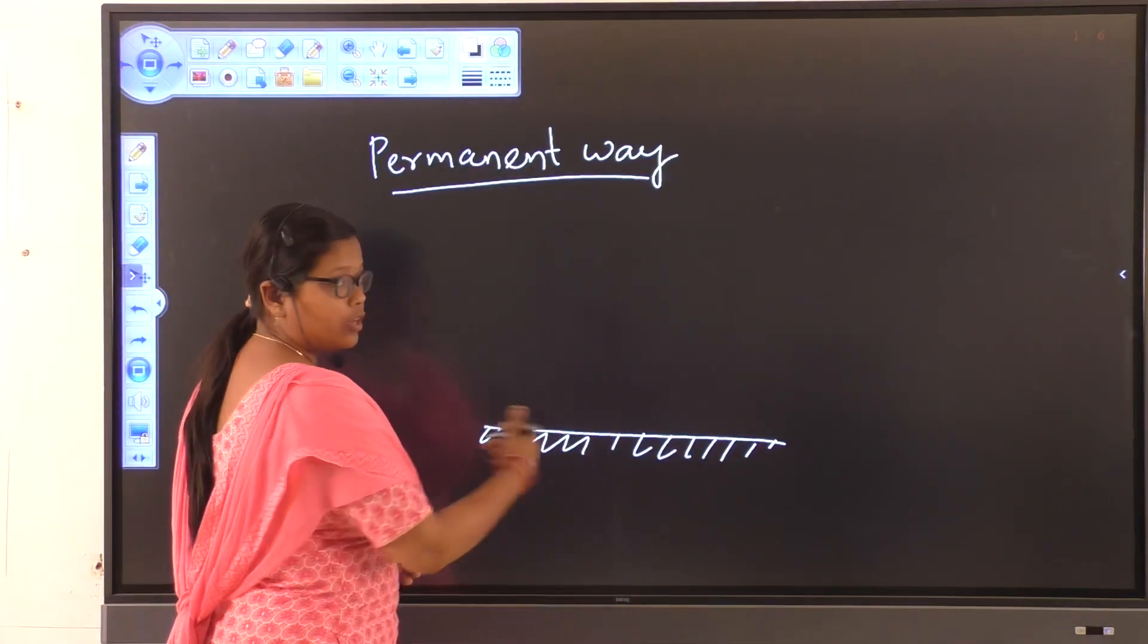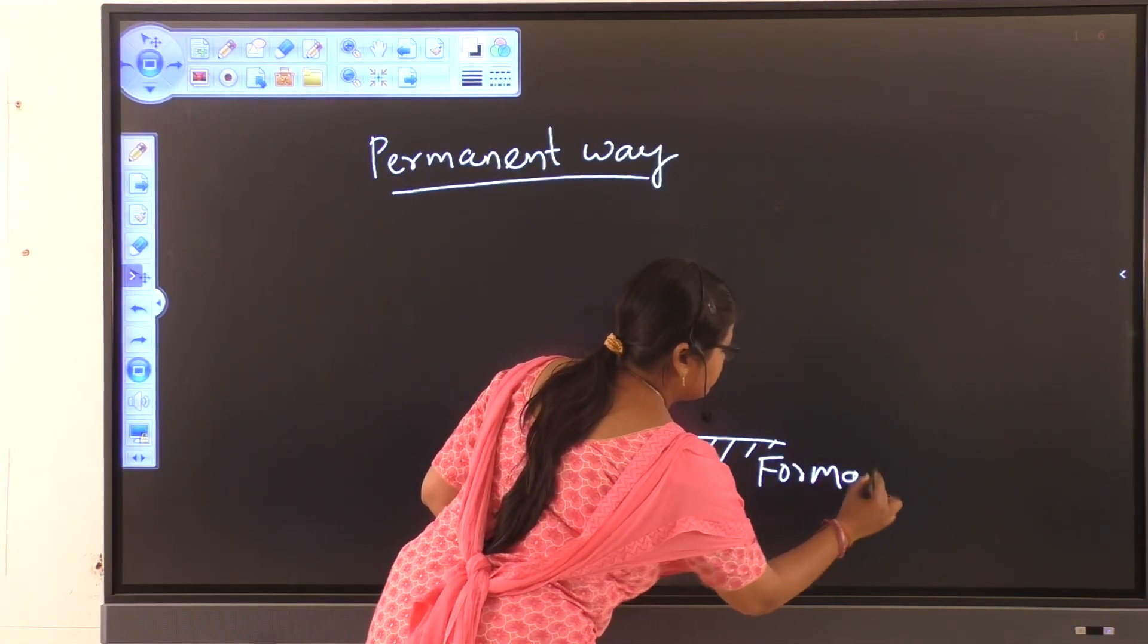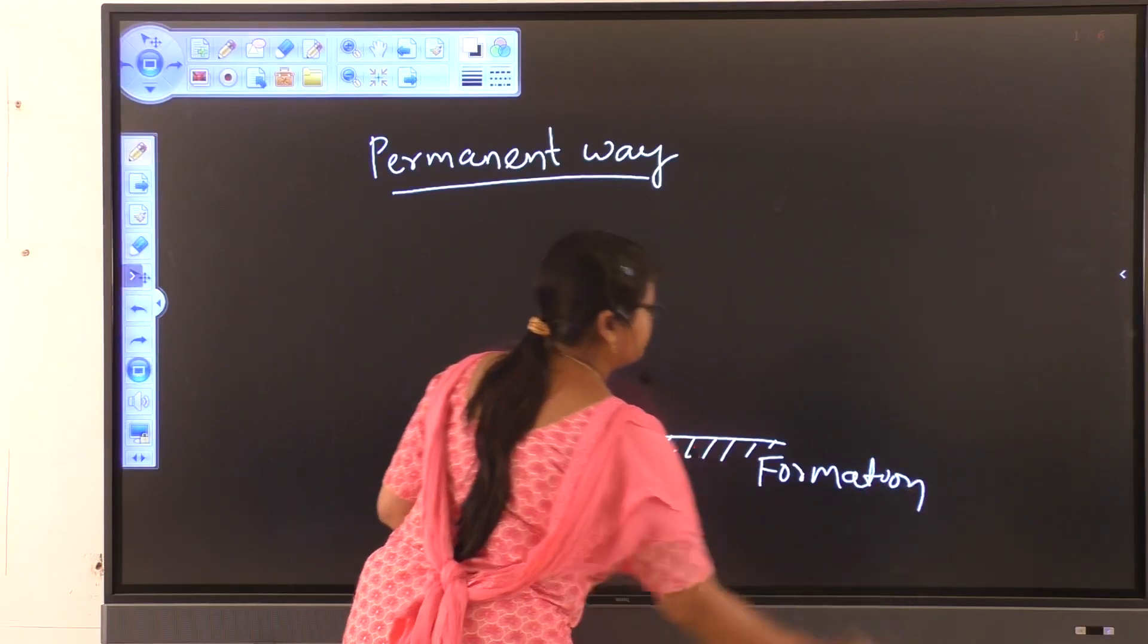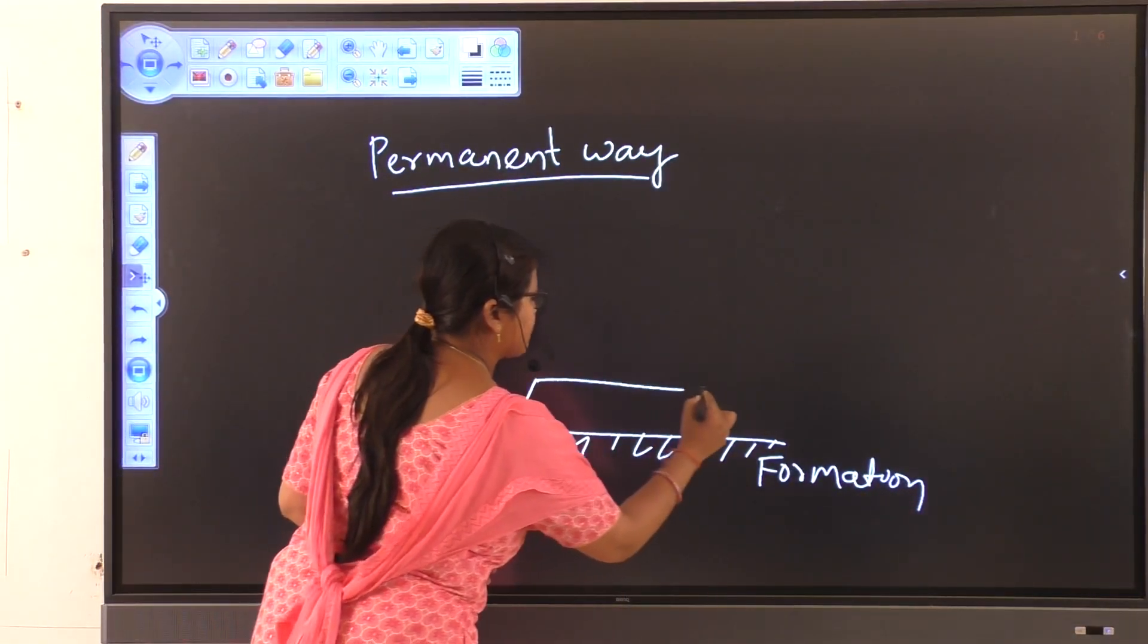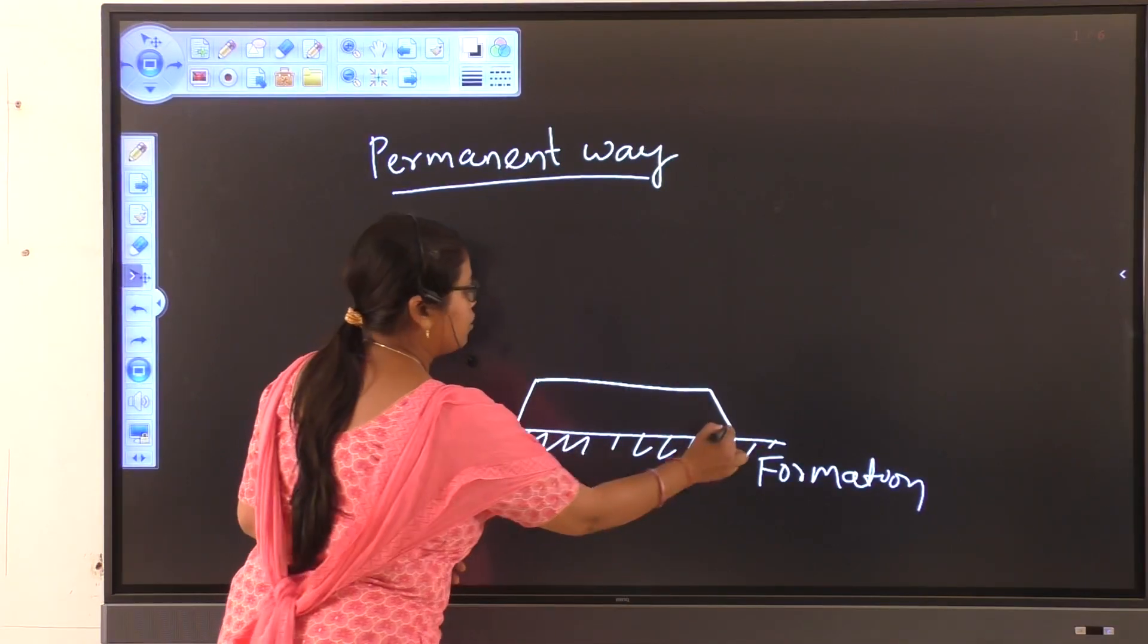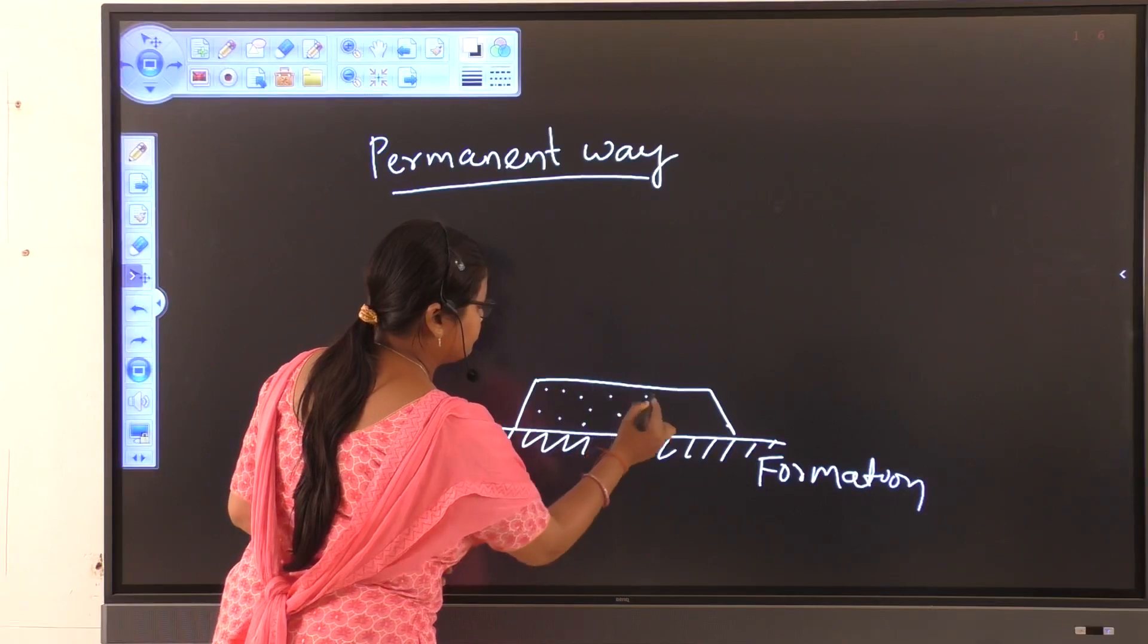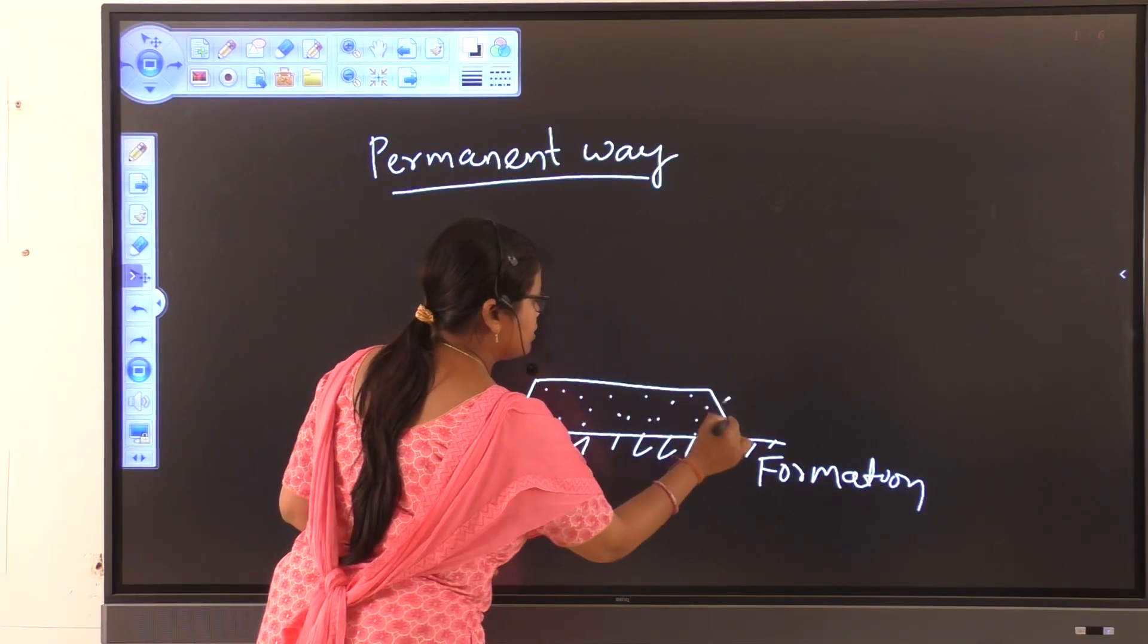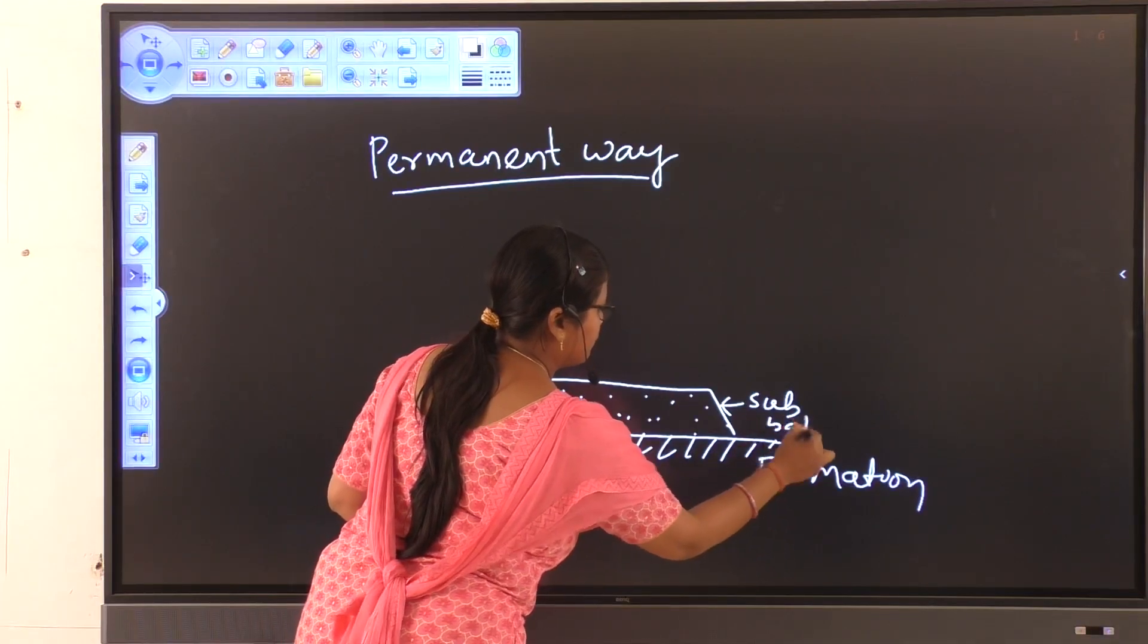This is the soil layer and this is known as formation. Over this, a layer of small size aggregates are placed. And this layer is known as sub-ballast.